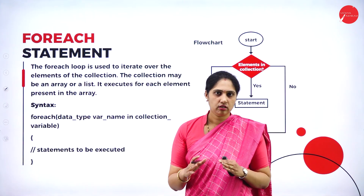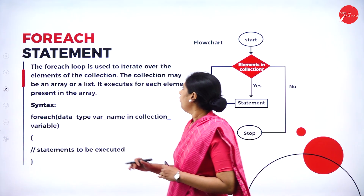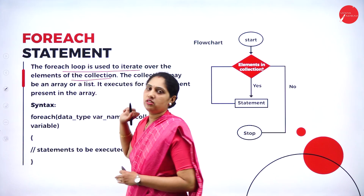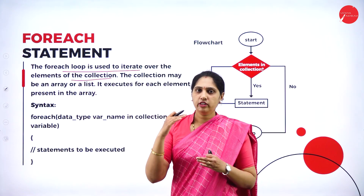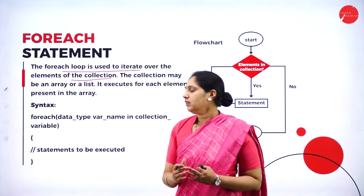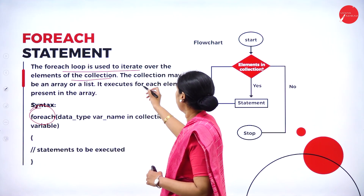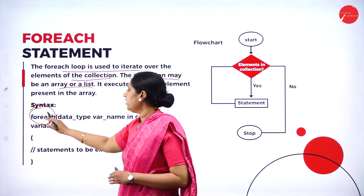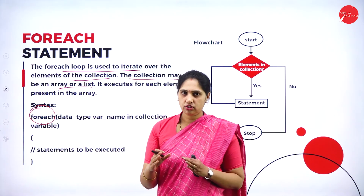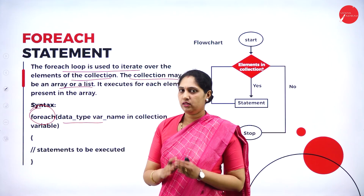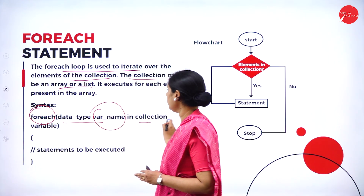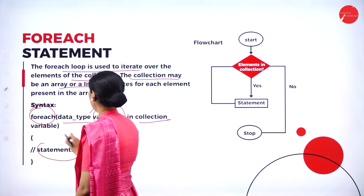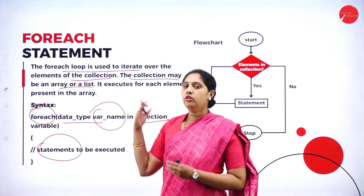For-each is also used in iteration, but we use it with collections. For example, if we have an array and need to print all its elements — an array is a collection — that is when we use for-each. The collection may be an array or a list. The syntax is: instead of writing 'for' we add the word 'each' — foreach. Then specify the data type, variable name, and 'in collection'. If elements are present (true), the statement executes; if there are no elements (false), it exits the for-each loop.